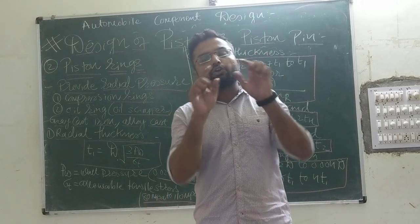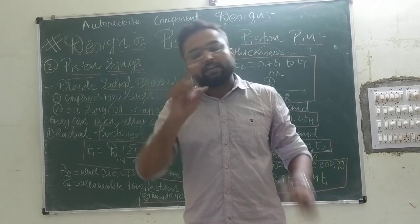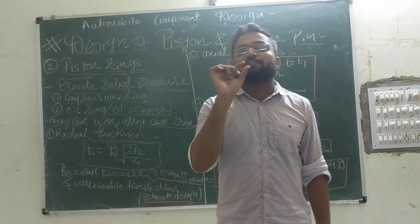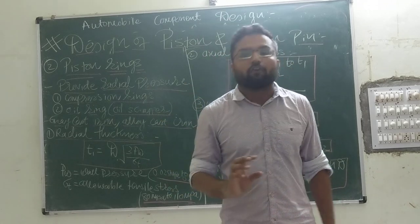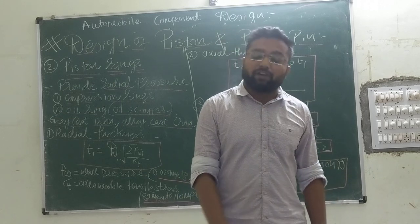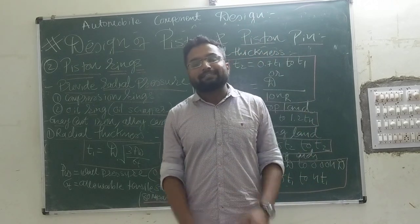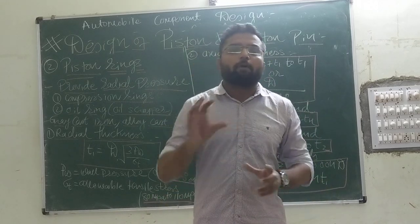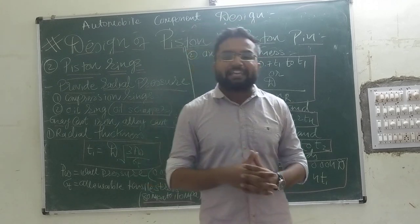This ring is not a continuous ring — it is open or cut at one end, and we are going to determine the gap between the two ends of the ring. One measurement is after mounting on the piston and another is before mounting. After mounting on the piston, the gap will depend on the diameter of the piston, and before mounting, it depends on the axial thickness of the piston. We are going to use some empirical relations for our piston ring section.